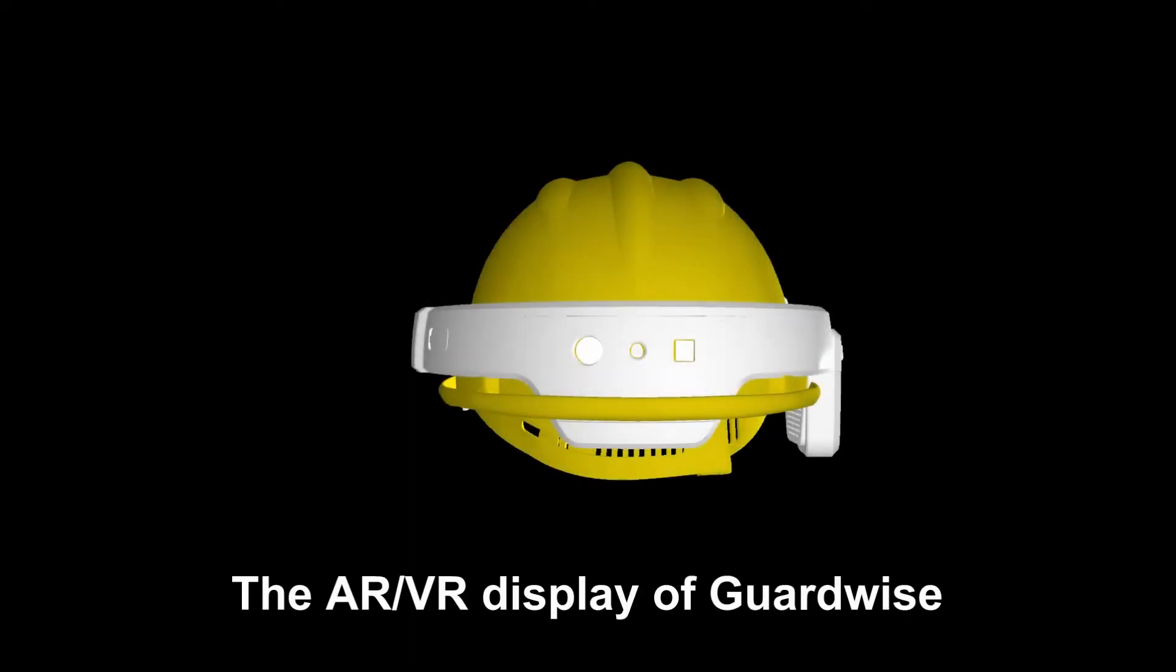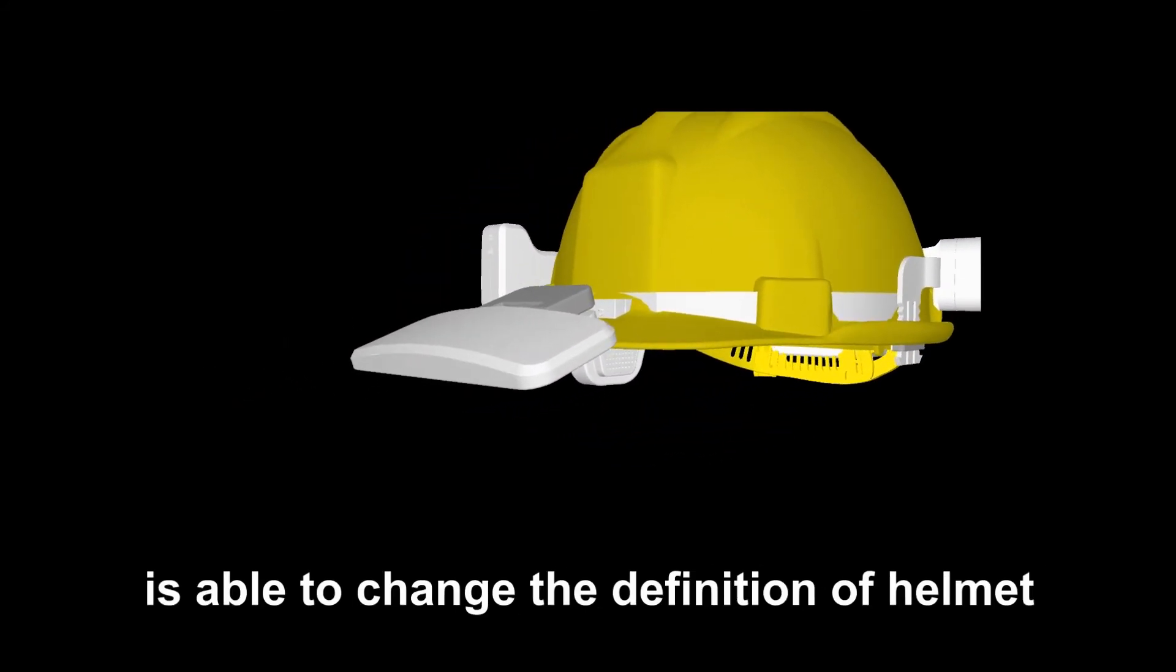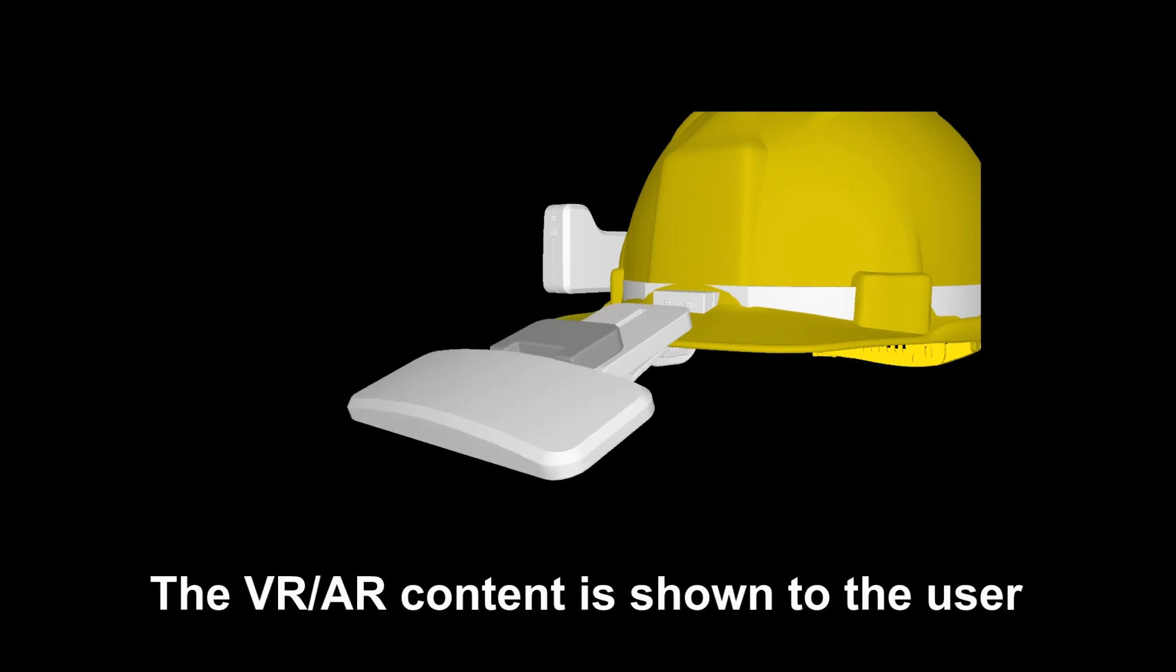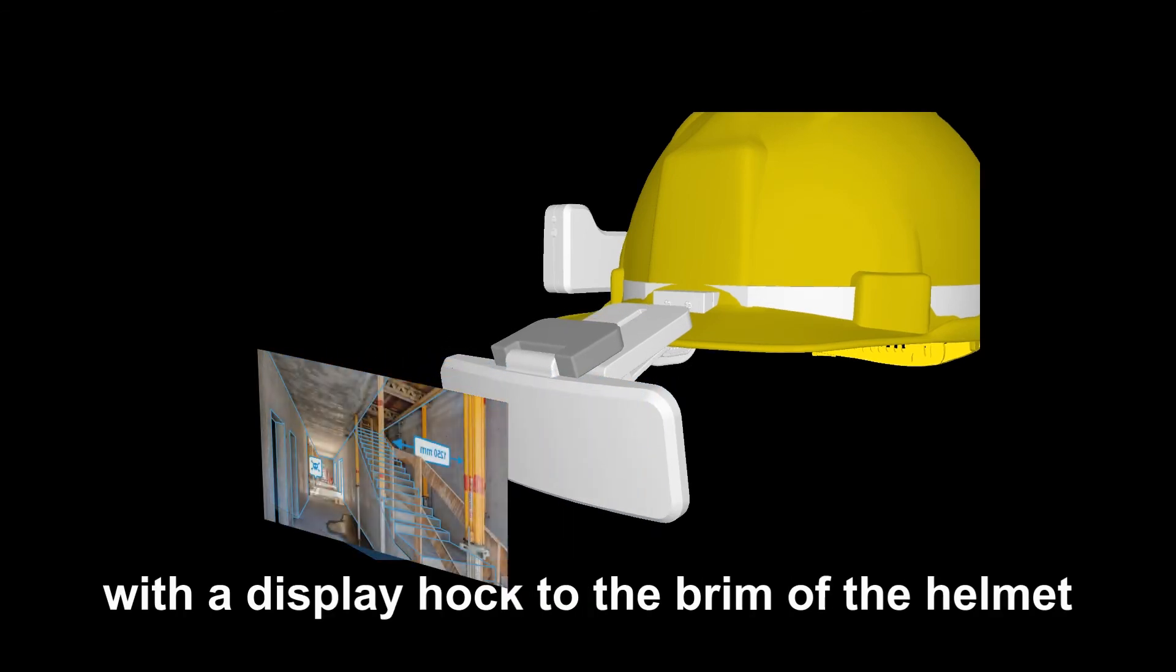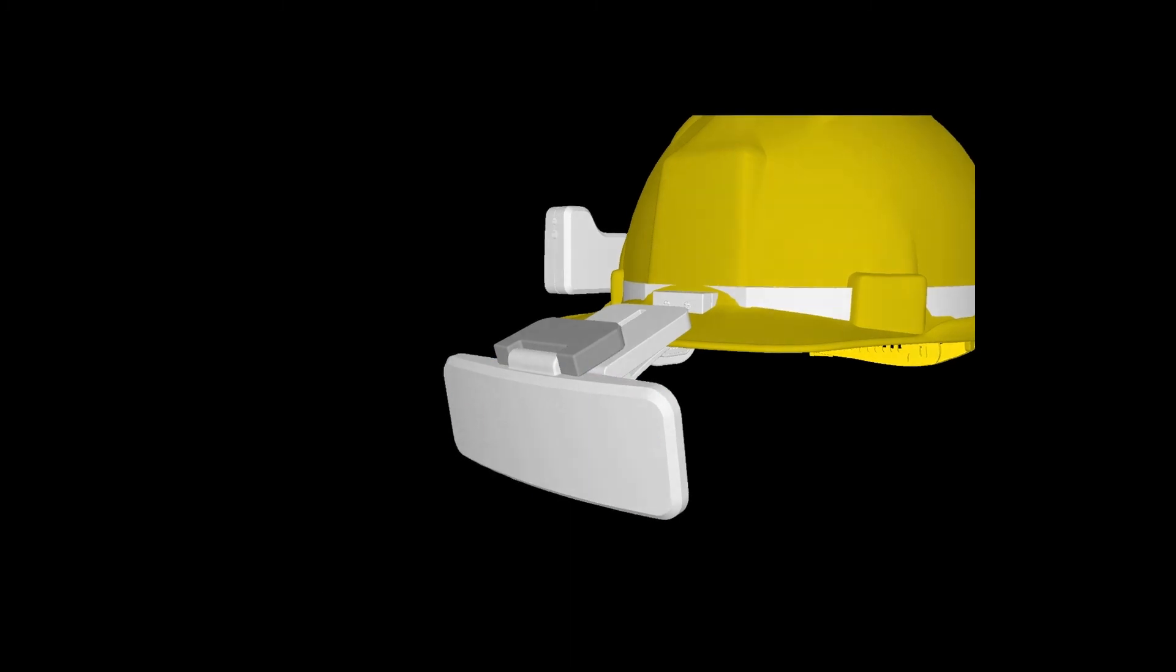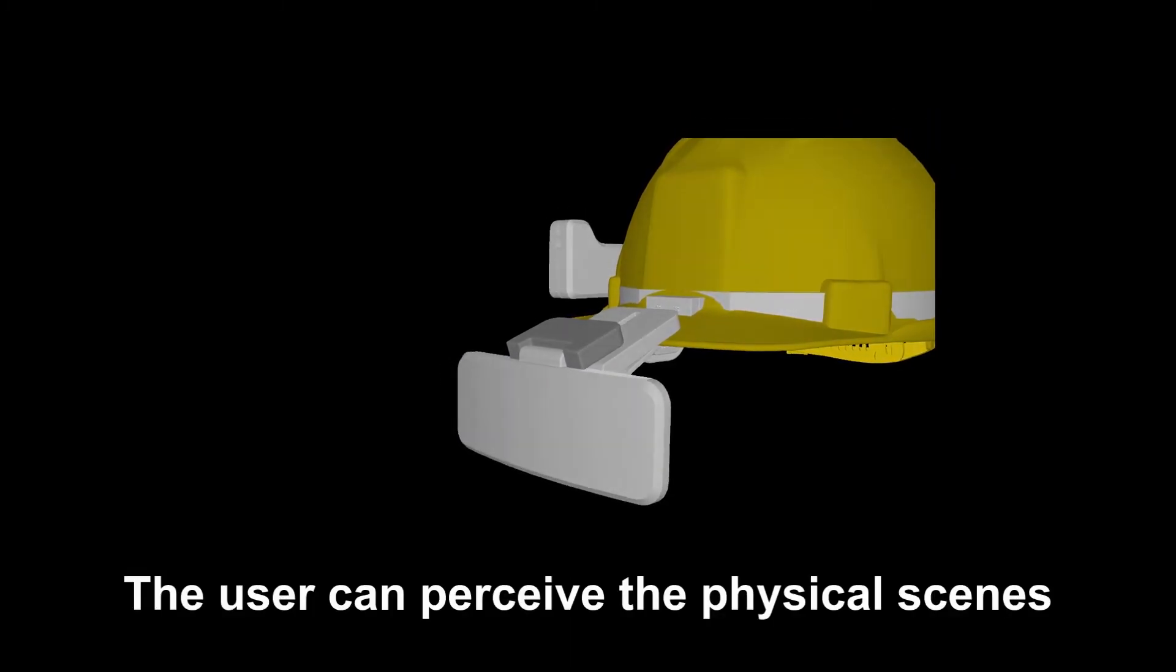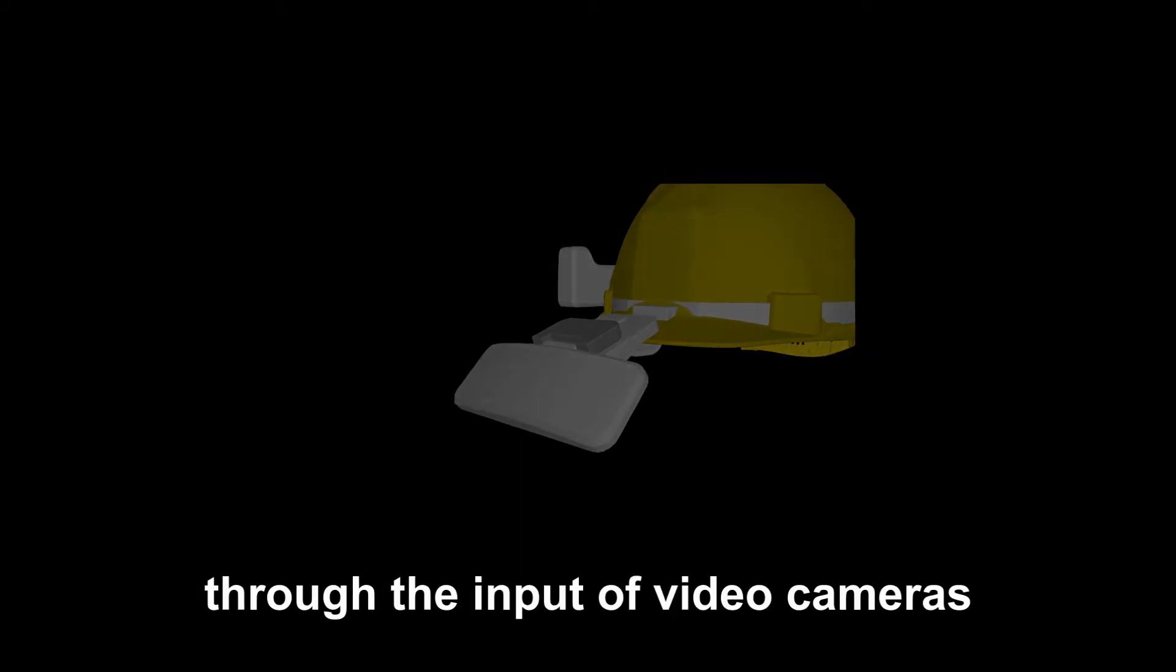And here is the exciting part. The AR or VR display of GuardWise is able to change the definition of helmet. The VR or AR content is shown to the user with the display hooked to the brim of the helmet and connected to the inner part of the integrated device. The user can perceive the physical scenes and synthetic content simultaneously through the input of video cameras and the virtual reality system.